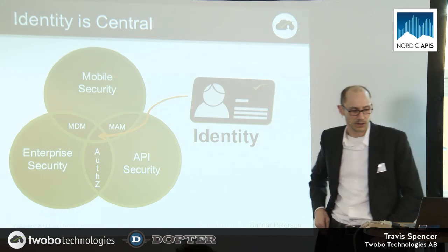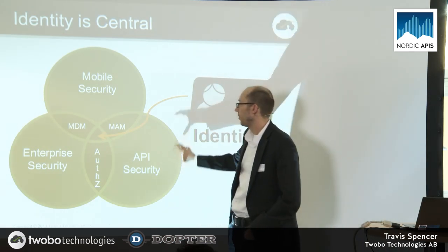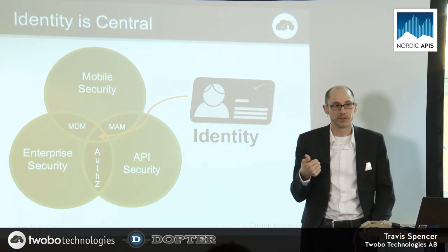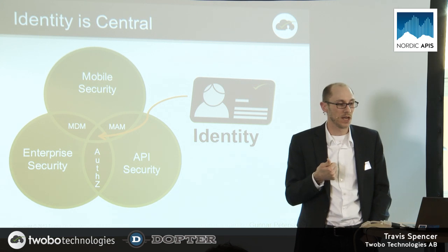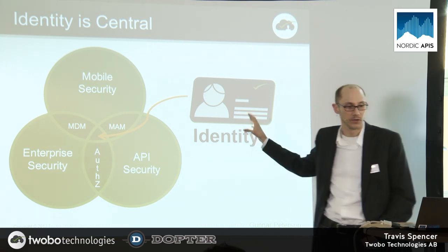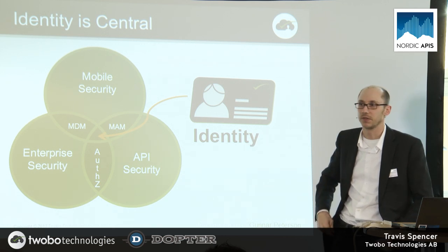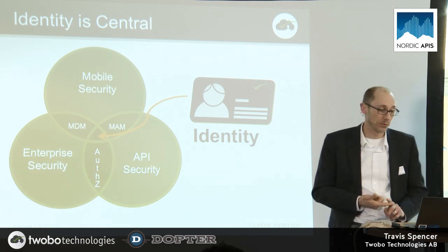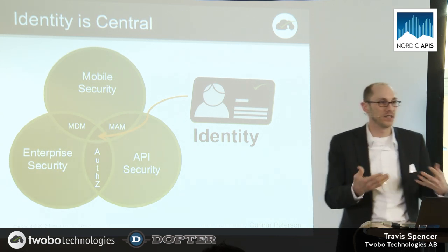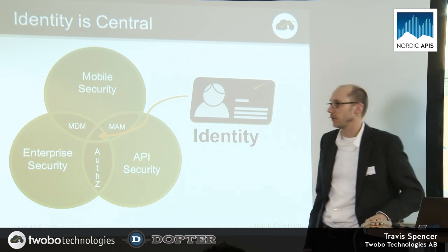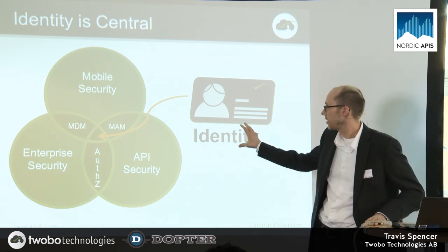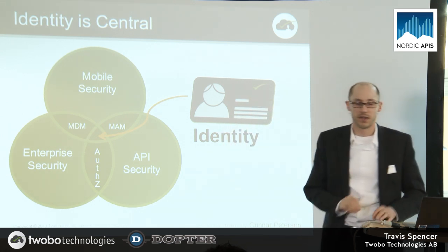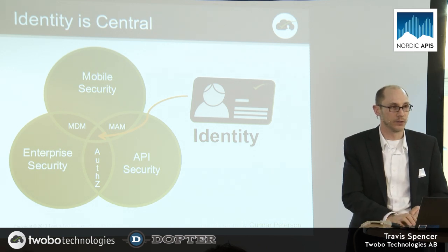When you look at the overlap of those three concerns, digital identity is right there in the middle. Knowing who someone is is the very first thing you need to do to answer the security questions of any of those concerns — whether it's enterprise security, API security, or mobile security. Only once you know who somebody is can you answer the question: what are they allowed to do? Afterward you can say what did they do — you can audit that. But it all begins with knowing who someone is. Put API security together with enterprise security and mobile security, figure out who someone is, and then you're starting to talk about a comprehensive security solution for mobility.